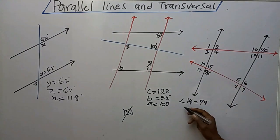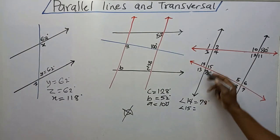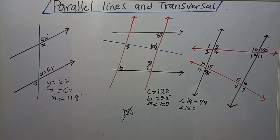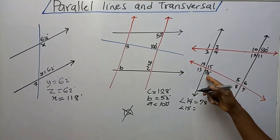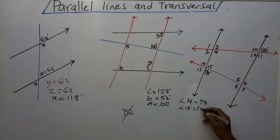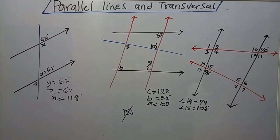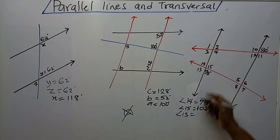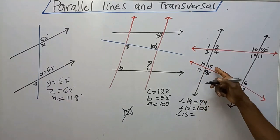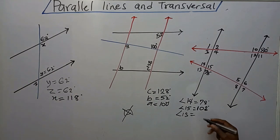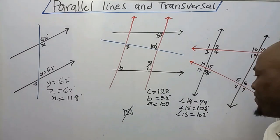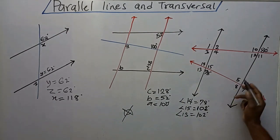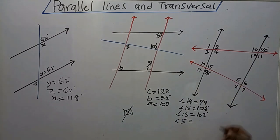Now for angle 15: this is a straight line, so the sum of angles on a straight line is 180 degrees. So 180 minus 78 degrees gives me 102 degrees. The reason for 15 is sum of angles on a straight line. Now for angle 13: since 15 is 102, and these are intersecting lines, the angles apart are vertically opposite, so angle 13 is also 102 degrees.